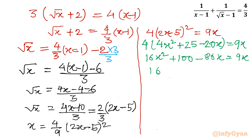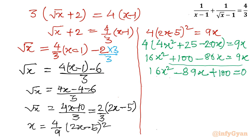Taking all terms to the left-hand side: 16x squared minus 89x plus 100 equals 0. This is a quadratic equation, and for this we will apply the quadratic formula.